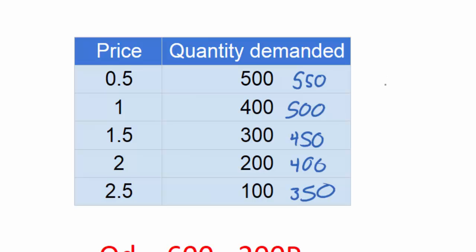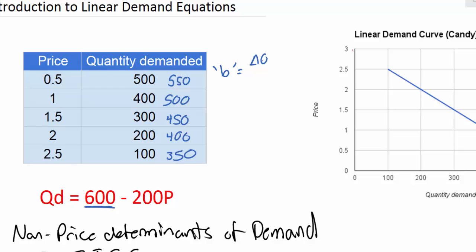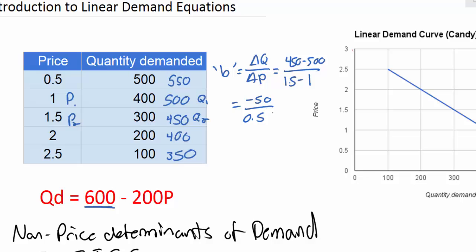What's actually changing is the B variable in demand. To find our new B variable, we use the method from the first lesson: find the change in quantity and divide it by the change in price. Choosing two points — Q1, Q2 and P1, P2 — we calculate Q2 minus Q1, that's 450 minus 500, divided by $1.50 minus $1.00. That simplifies to negative 50 over 0.5.